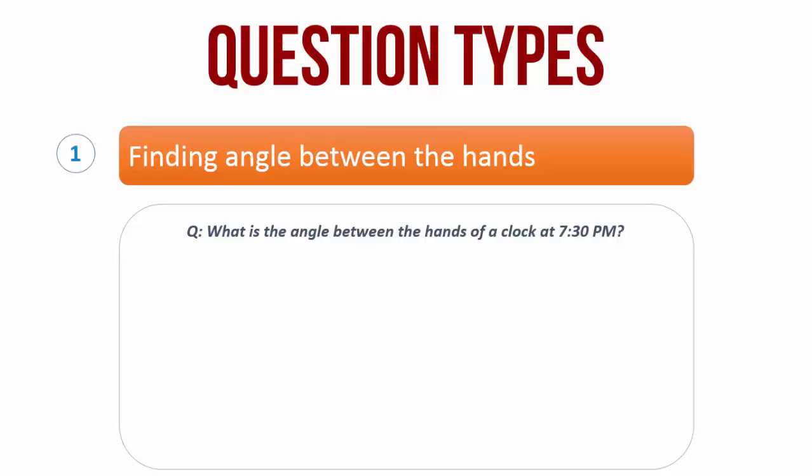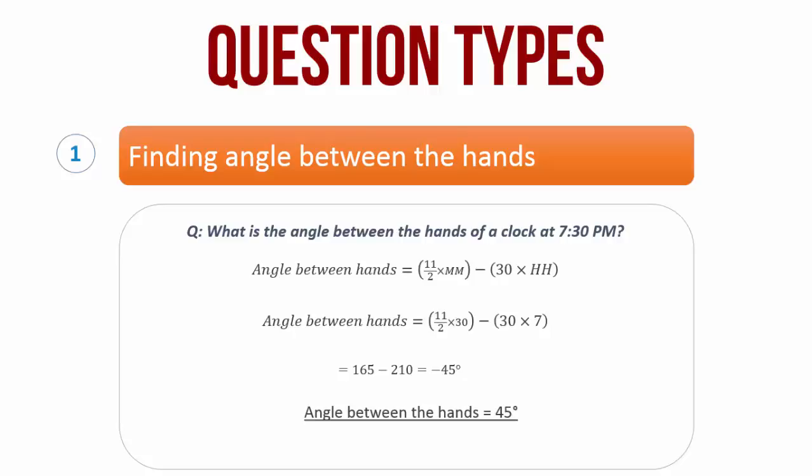Now we know the formula that was given to you a few slides before. Let us just substitute hours and minutes with 7 and 30. So the angle between the hands is 11 by 2 into 30 minus 30 into 7, which is equal to 165 minus 210, which is equal to minus 45 degrees. In terms of magnitude is equal to 45 degrees. So the angle between the hands of a clock at 7:30 PM is 45 degrees.